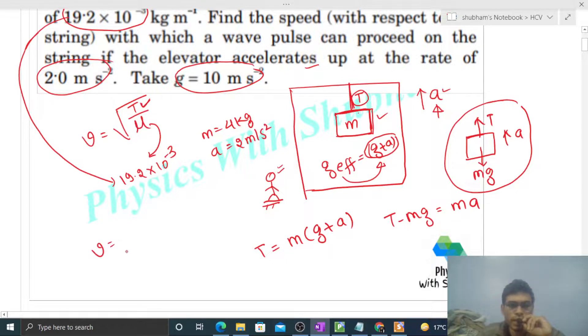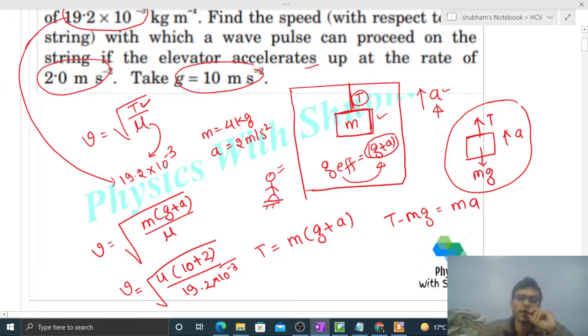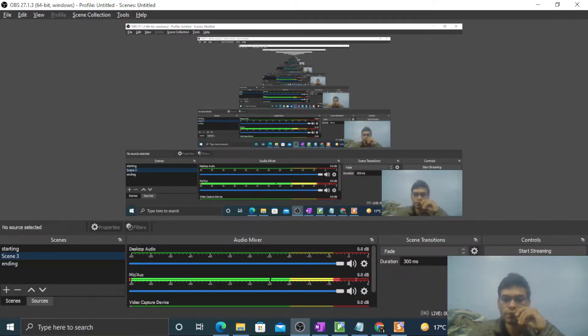So the speed will be √[m(g + a)/μ]. Look: mass is 4, g is 10, a is 2, divided by μ which is 19.2×10⁻³, and take the square root. You can find out the numerical value of the speed yourself.